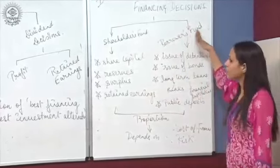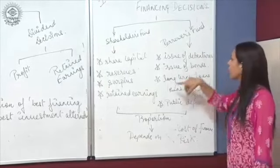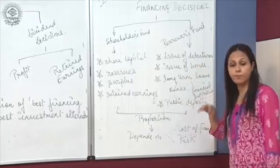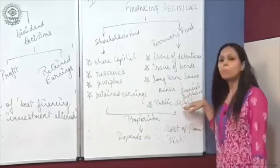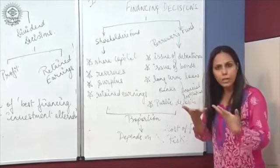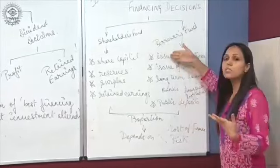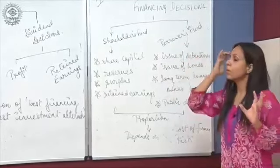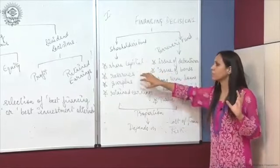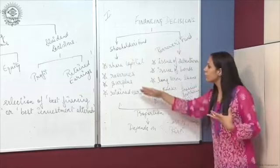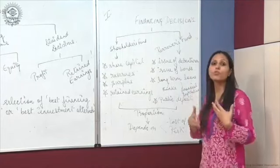The second source is borrowers fund. It consists of issues of debentures, bonds, long-term loans — which is a kind of borrowing from any bank or financial institution — and public deposits. So a company can make money available through these two main sources: issuing shares, debentures, taking loans, borrowing from banks, or using reserves, surplus, and retained earnings, which are further used for business activities.